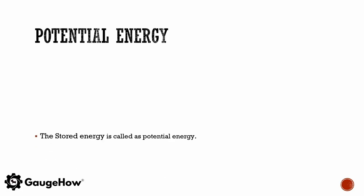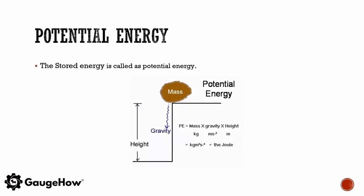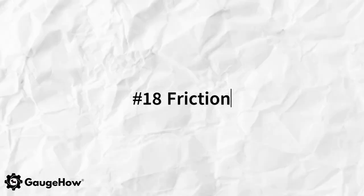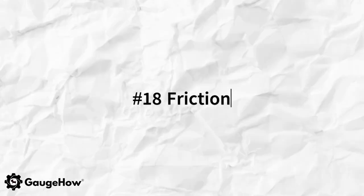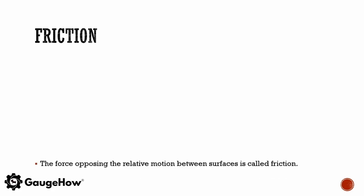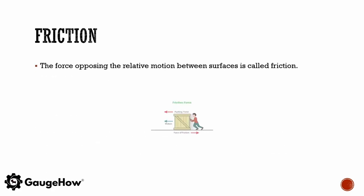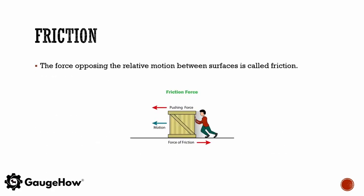Energy possessed by an object due to its motion is called kinetic energy. Stored energy that has the potential to do work is called potential energy. The force opposing the relative motion between surfaces is called frictional force.